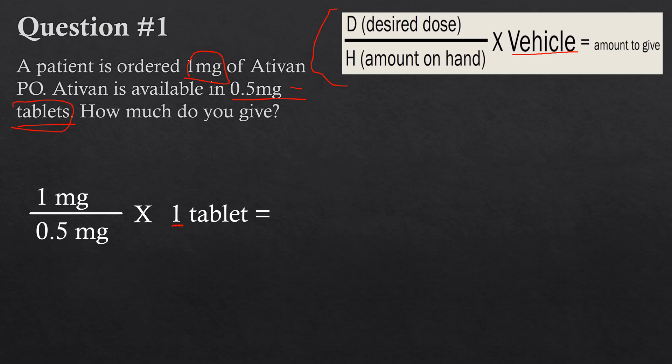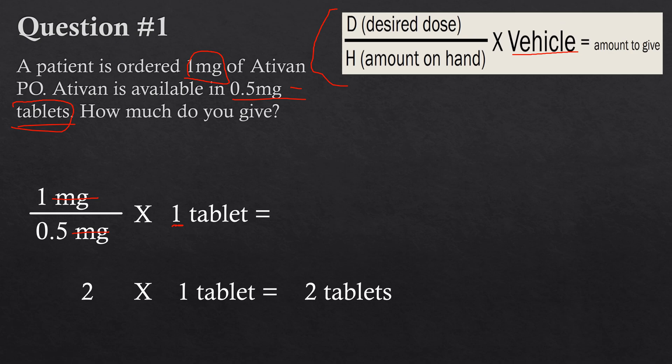Now we just solve: 1 milligram divided by 0.5 milligrams — the milligram units cancel out, giving us 2. Two multiplied by the vehicle, which is one tablet, gives us two tablets. Again, this is a very straightforward question, but once you get this formula down pat it will be much easier going forward for even more complicated questions because you do it the exact same way.